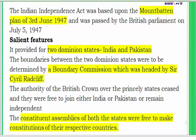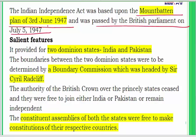The Indian Independence Act of 1947 was based on the Mountbatten Plan of 3rd June 1947. Lord Mountbatten was sent to India by the British government with full authority. This plan was passed by the British Parliament on July 5th, 1947. It clearly laid down that India would be divided and two new countries would be formed — India and Pakistan. There would be a Boundary Commission to determine the boundary line between the two countries.